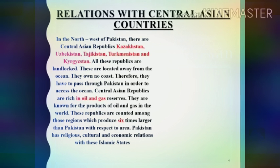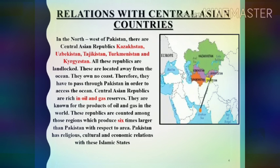The second topic is the relations of Pakistan with the Central Asian countries. You can see on the map that in the northwest of Pakistan there are Central Asian Republics. These countries are Kazakhstan, Uzbekistan, Tajikistan, Turkmenistan, and Kyrgyzstan. All these republics are landlocked, which means they don't share their border with any ocean — they have no coastline.